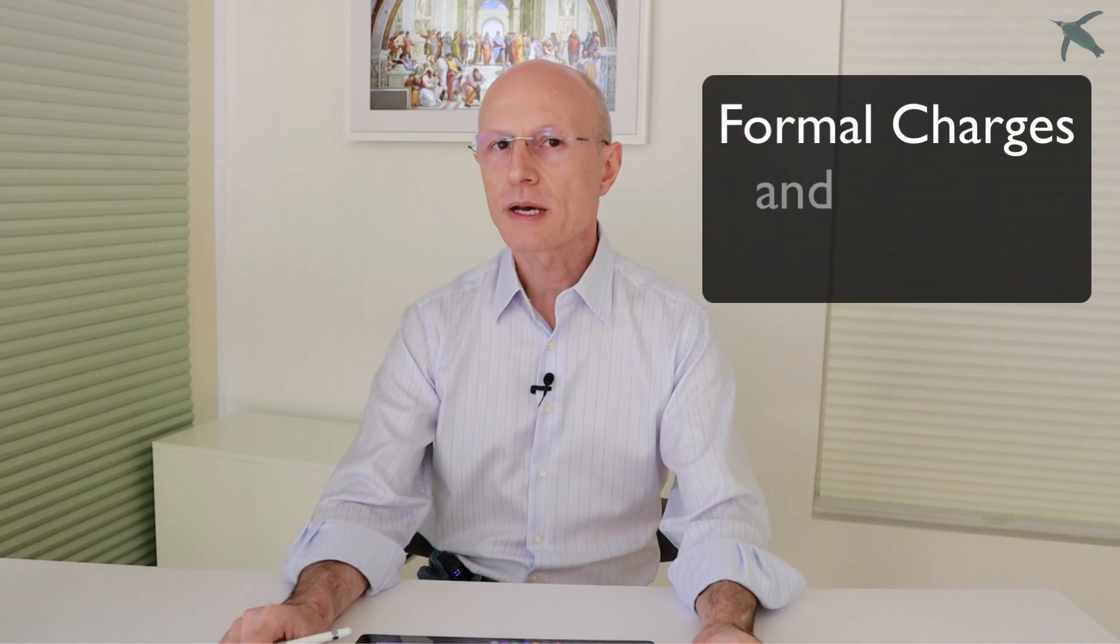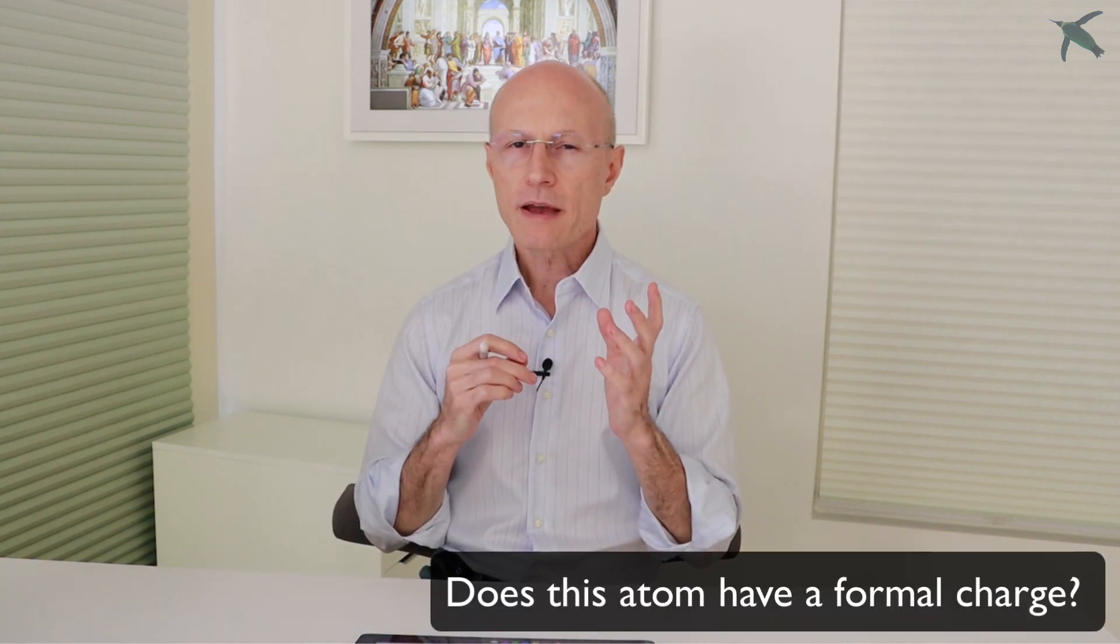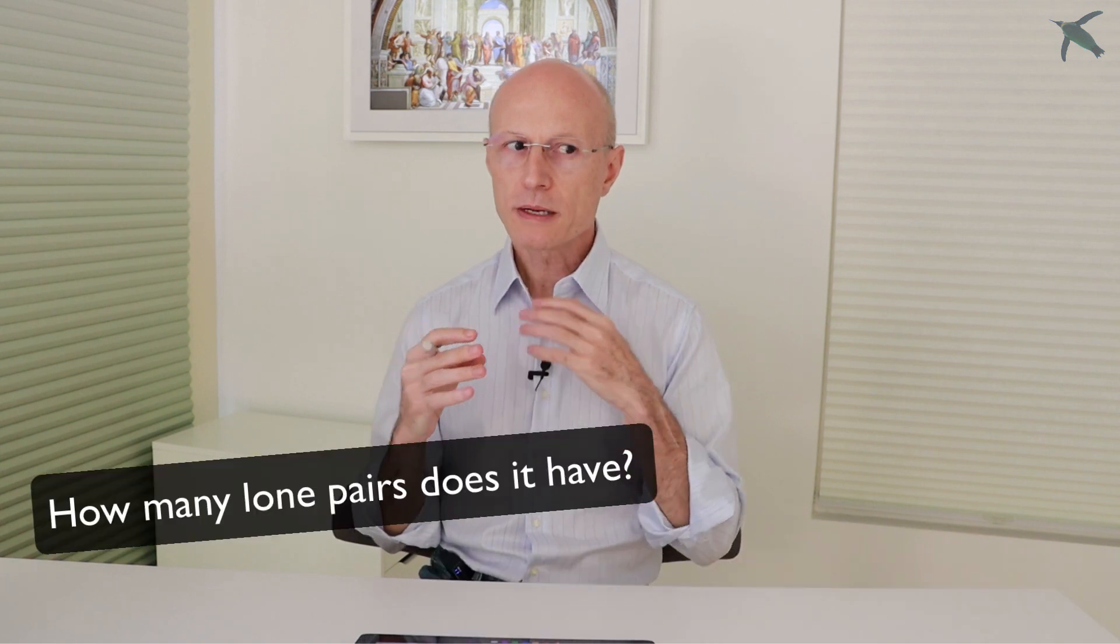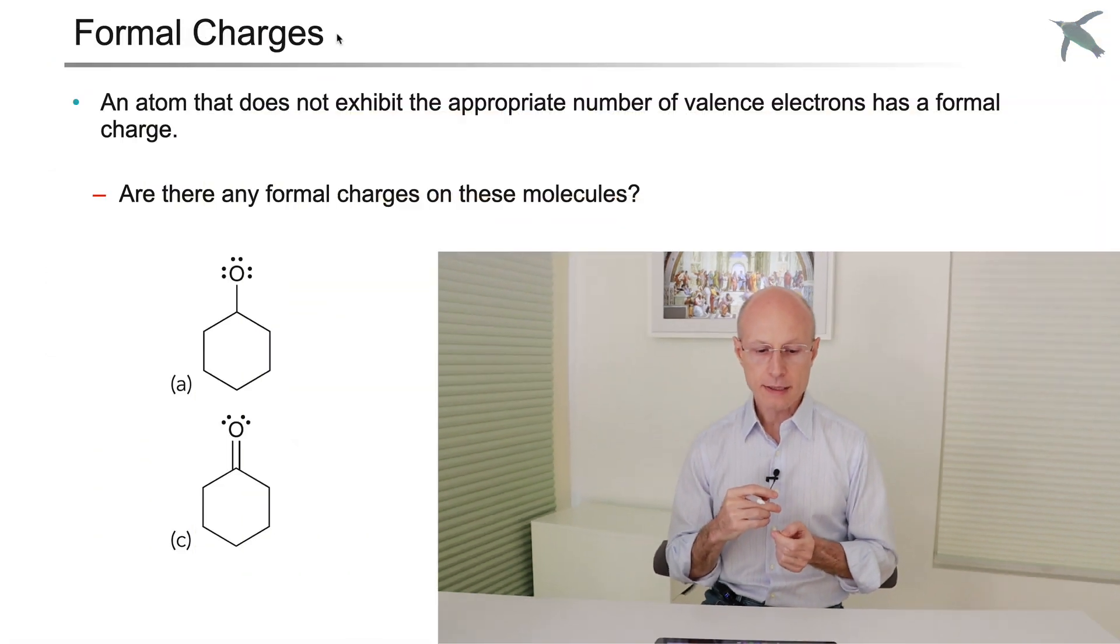Hello everybody and welcome to the organic chemistry series. One of the problems organic chemistry students most often struggle with is that of formal charges and lone pairs. Does this atom have any formal charge? How many lone pairs? How many bonds does it make? And when I'm drawing mechanisms, do I have to draw them all the time? Let's address that one at a time.